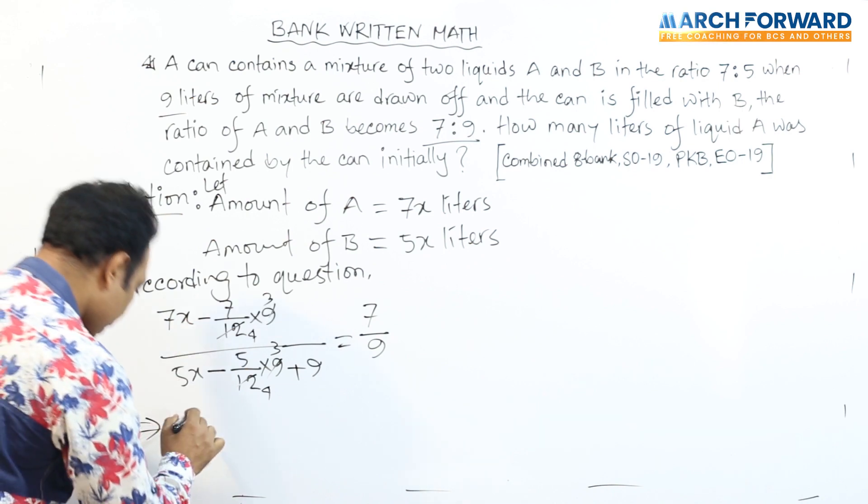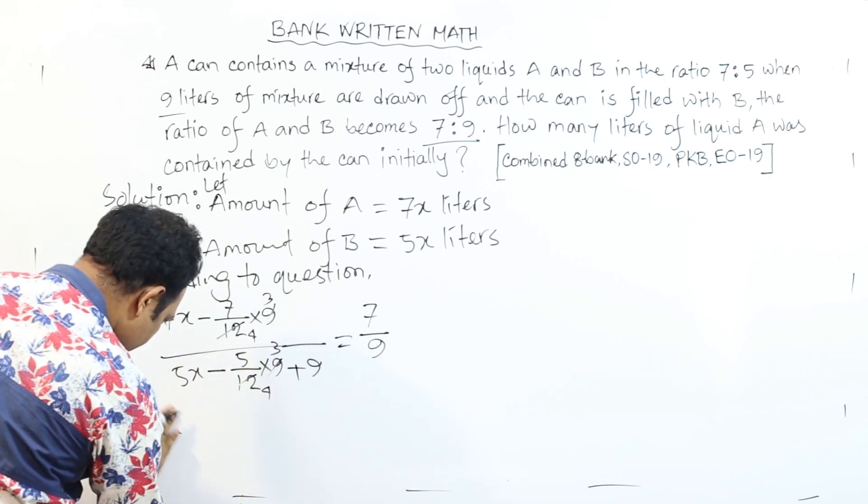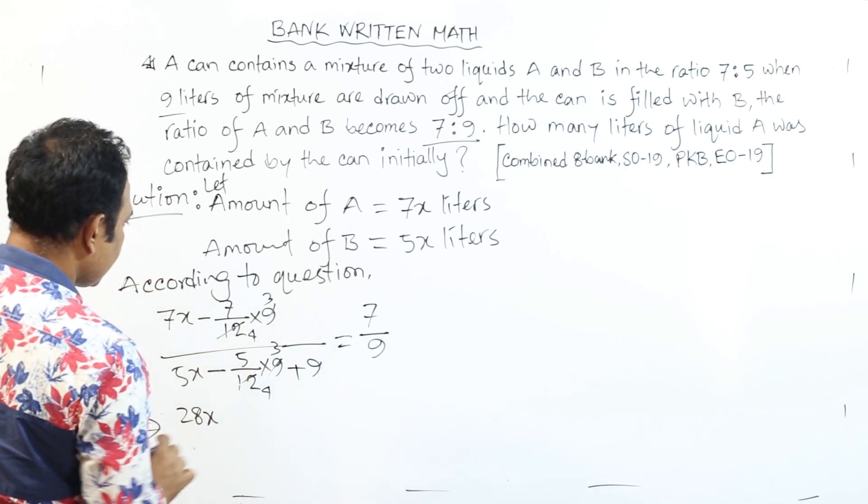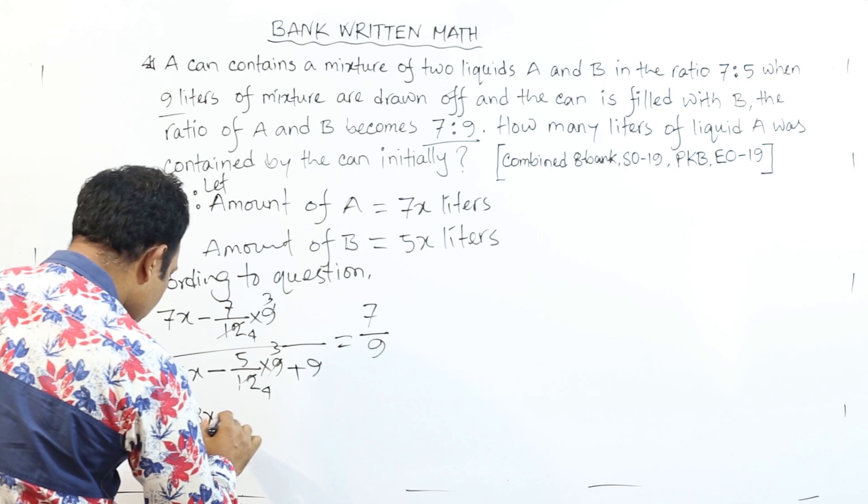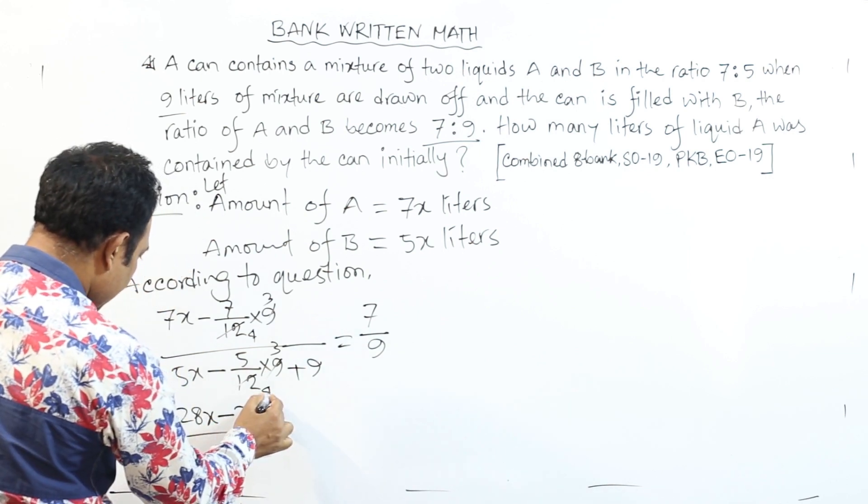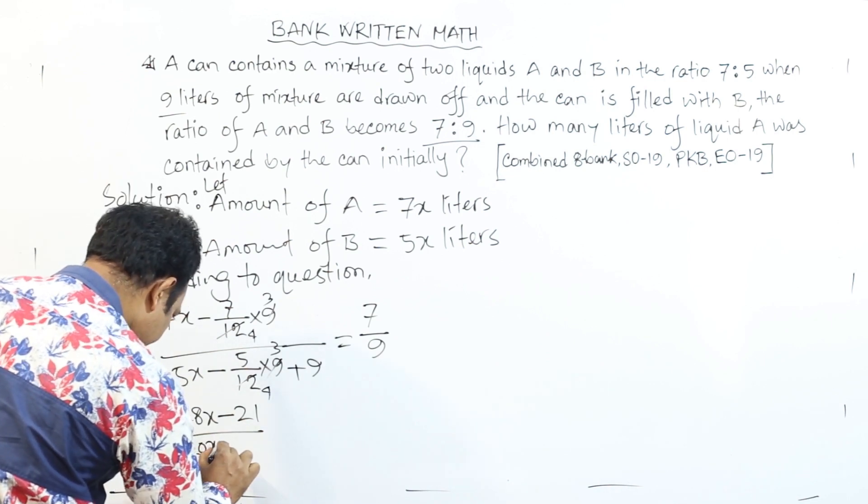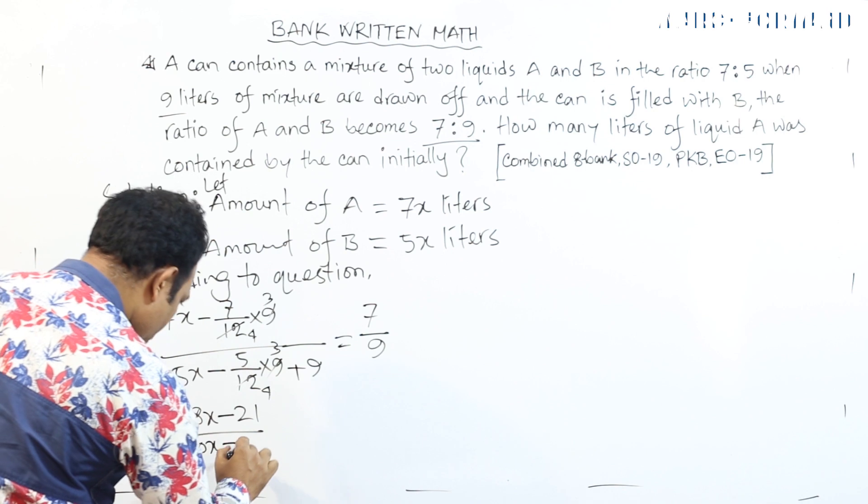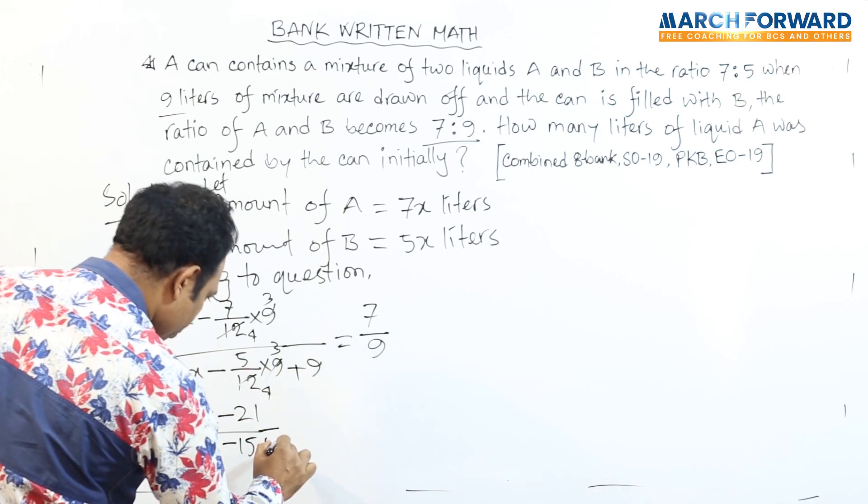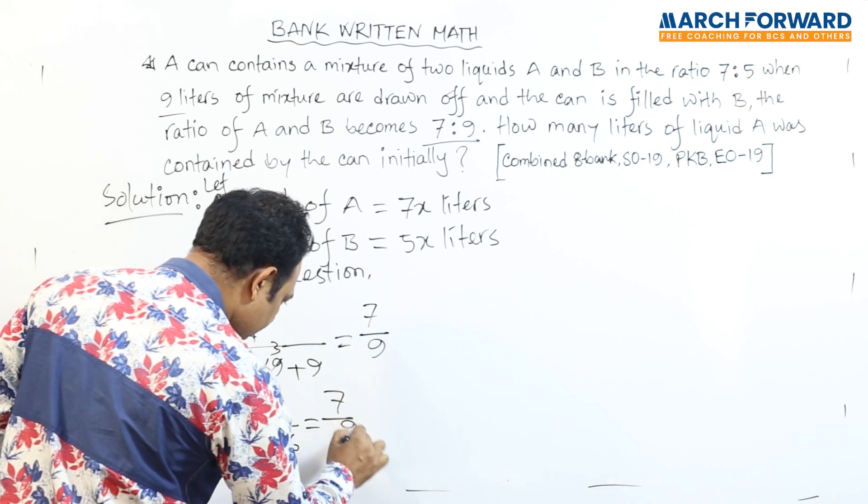We can write 4, 7, 8. So we can write 8x. And here 3, 7, 21 minus 21 divided by. Here we can write 4 times 5 is 20, so that's 20x minus 3 times 5 is 15. So that's 15 plus here 4 times 9 is 36. We can write 36 equals to 7 divided by 9.